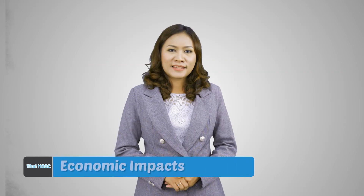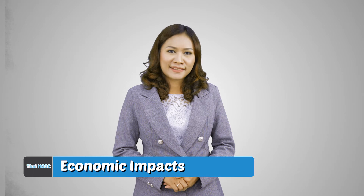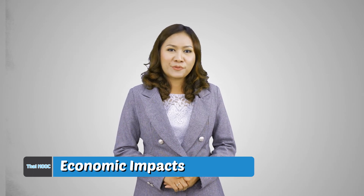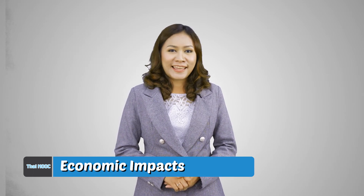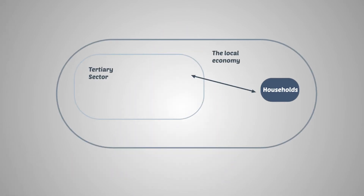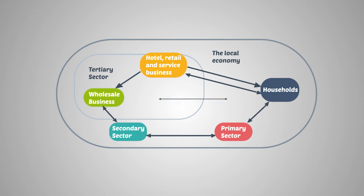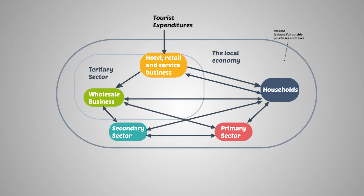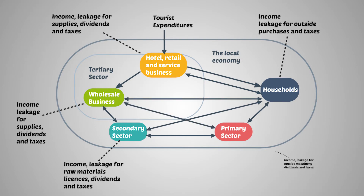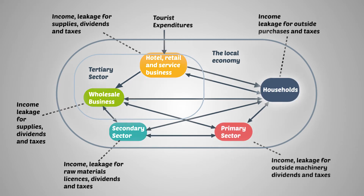The challenging thing about economic impacts is to balance between leakage and linkage. Economic leakage is the direct income for an area — it's the amount of tourist expenditure that remains locally after taxes, profits, and wages are paid outside the area. Leakage can happen in many ways.